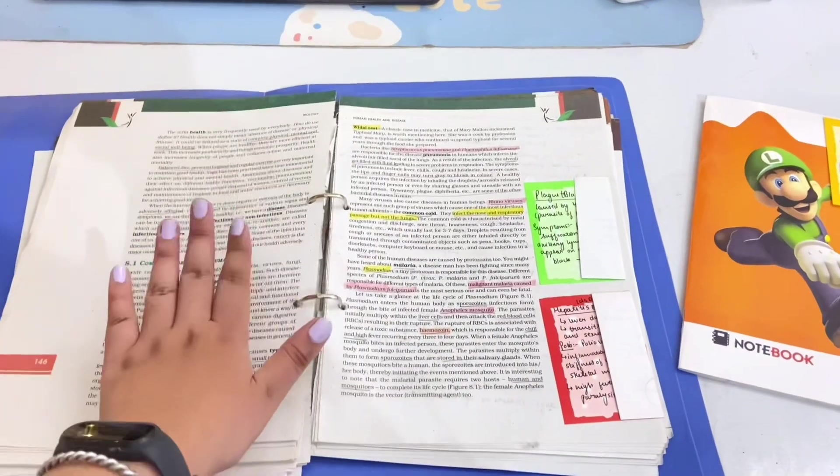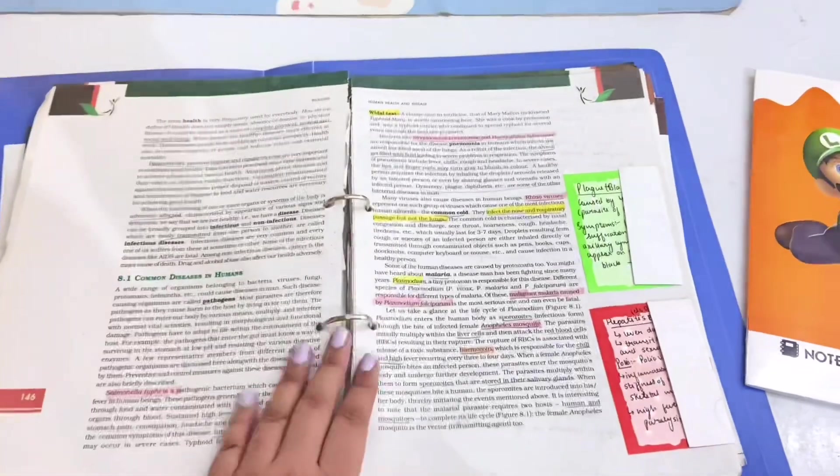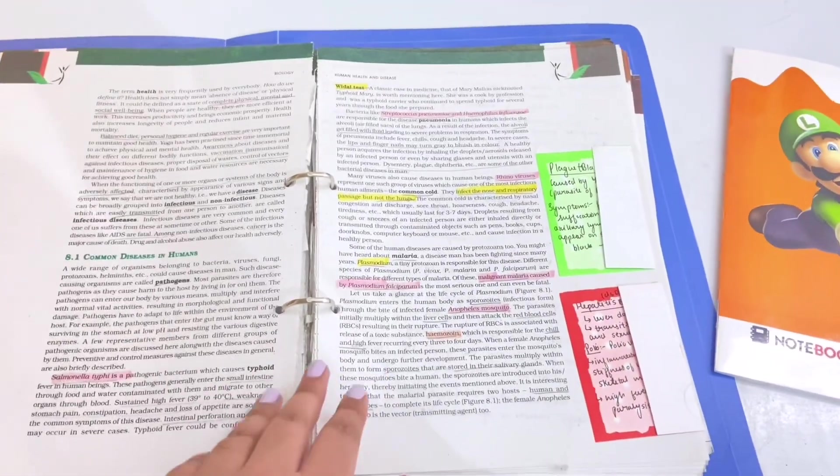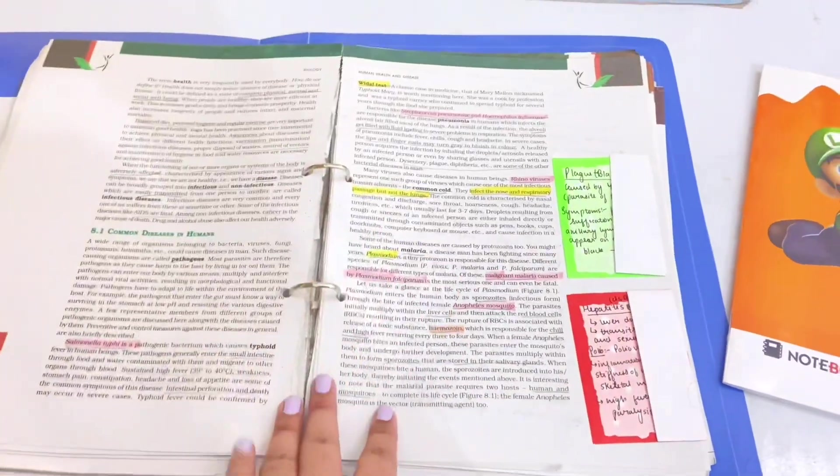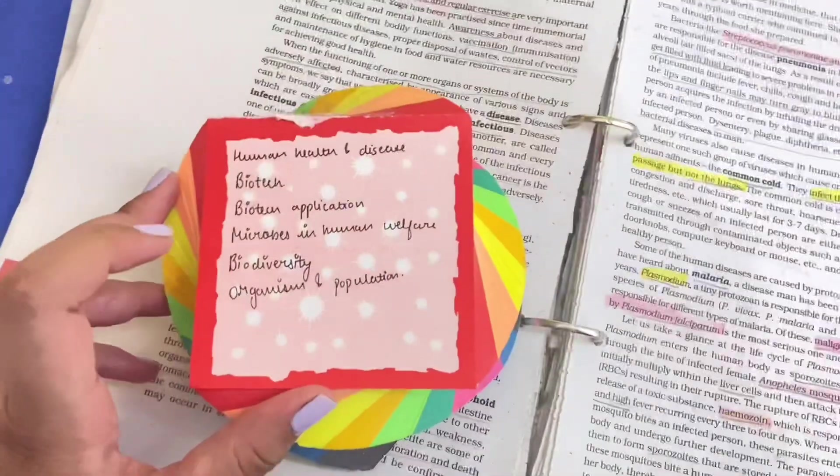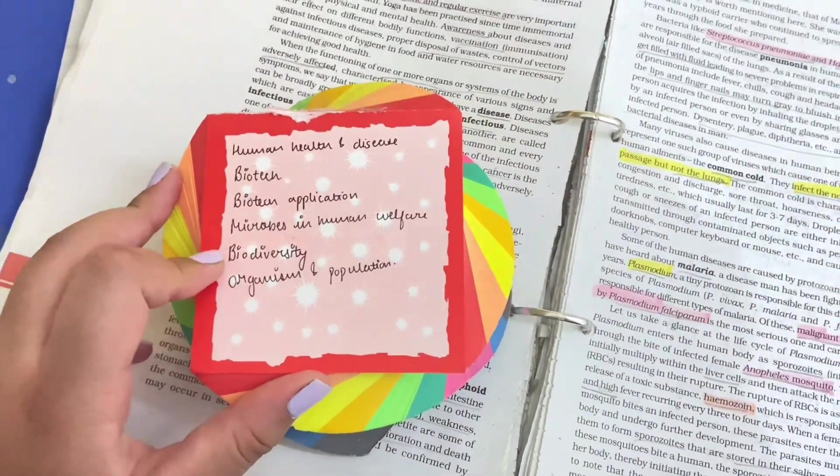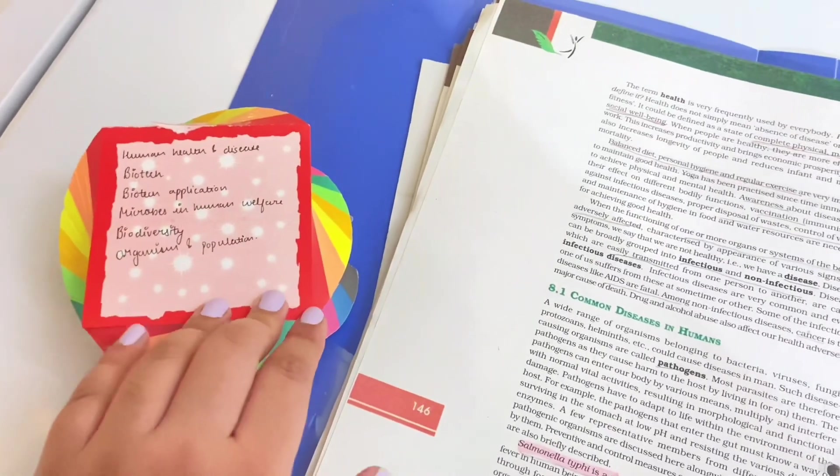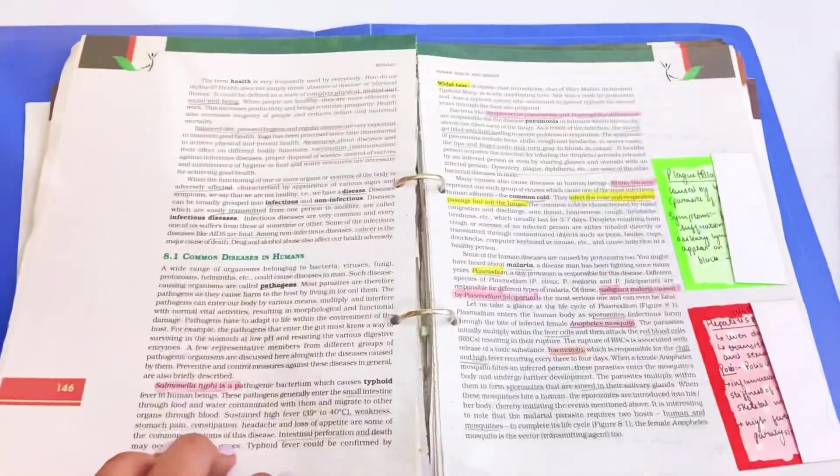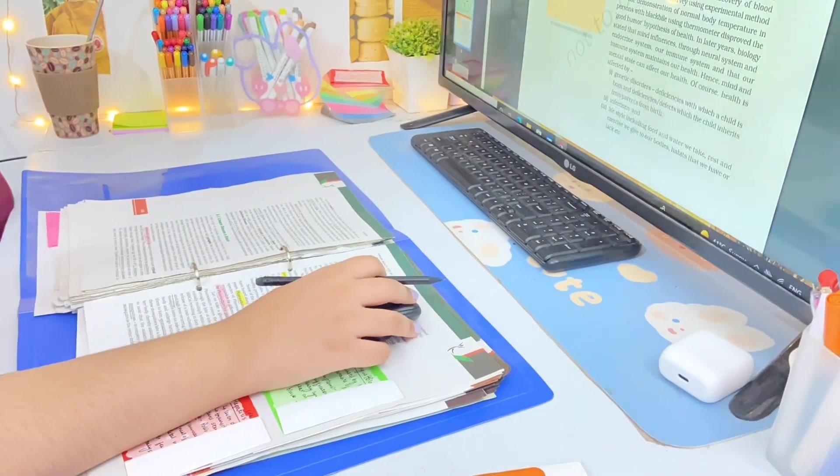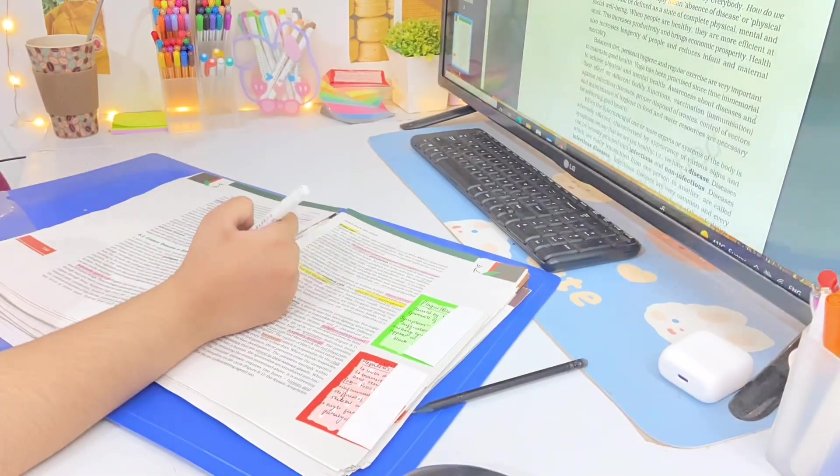Today I'm going to start with my bio exam preparation. My next board exam is bio, so I have a lot of time to prepare. I've made my to-do list with the chapters that are coming in the exam. The chapter I'm going to do today is Human Health and Disease, so let's get started with this one.